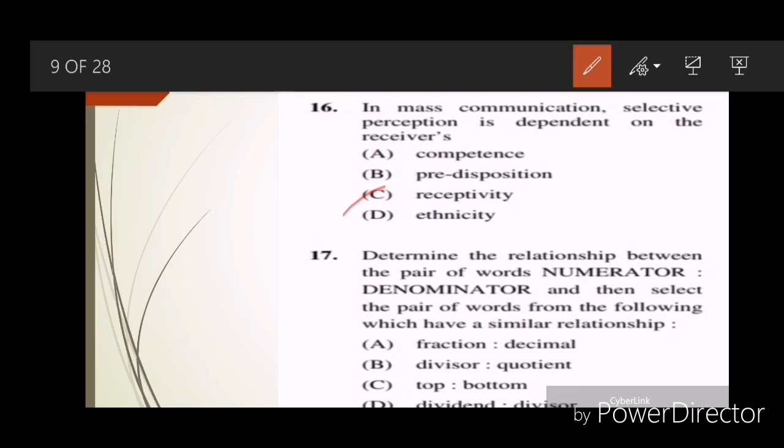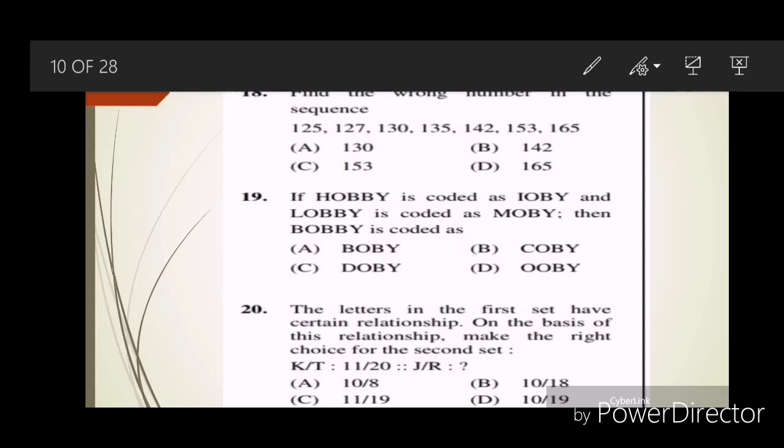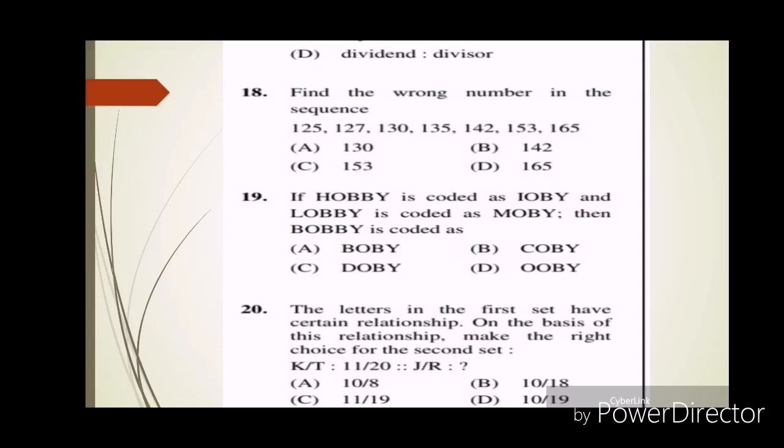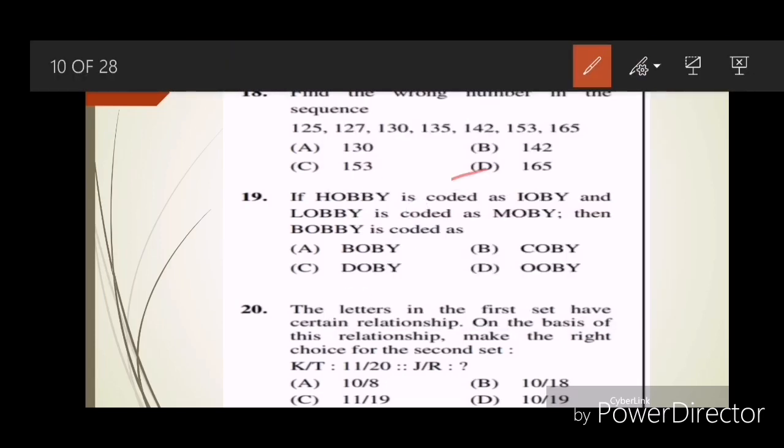Question seventeen: Determine the relationship between the pair of words numerator-denominator and then select the pair of words from the following which have similar relationship. Answer D, dividend-divisor. Question eighteen: Find the wrong number in the sequence 125, 127, 130, 135, 142, 153, 165. Answer D, 165. Question nineteen: If hobby is coded as IOBY and lobby is coded as MOBY, then bobby is coded as what? Answer is B, KOBY. Question twenty: The letters in the first set have a certain relationship. On the basis of this relationship, make the right choice for the second set. Answer B.